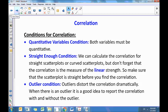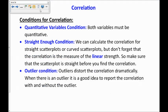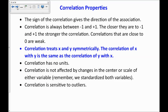Next, some correlation properties. All of these are important. The one that's in blue tends to show up quite a bit on AP exam, so be aware of that one. The sign of the correlation gives the direction of the association. If the correlation is positive, that means that there's a roughly positive slope. If the correlation is negative, it's a negative slope. Correlation is always between negative 1 and positive 1, and the closer they are to negative 1 and positive 1, the stronger the correlation. And correlations that are close to 0 are weak.